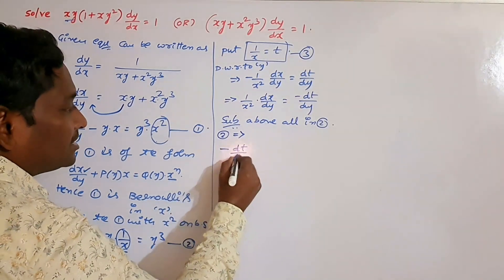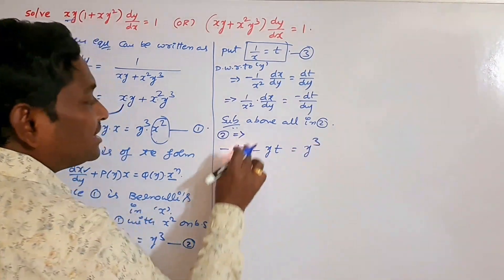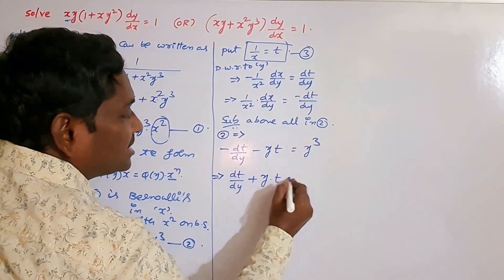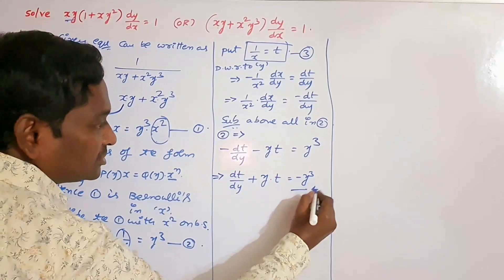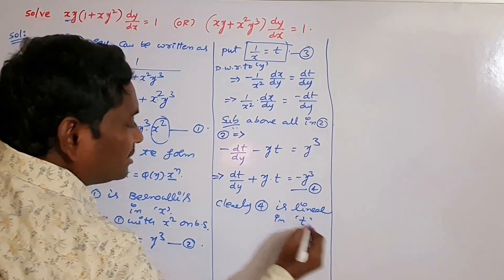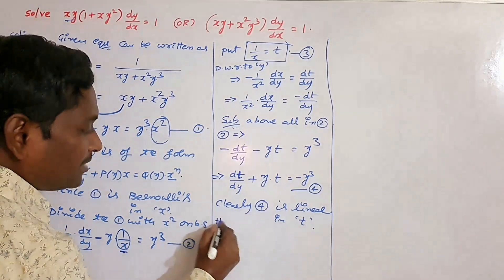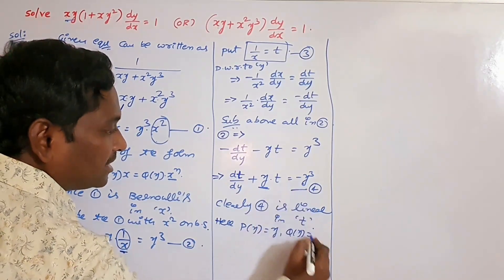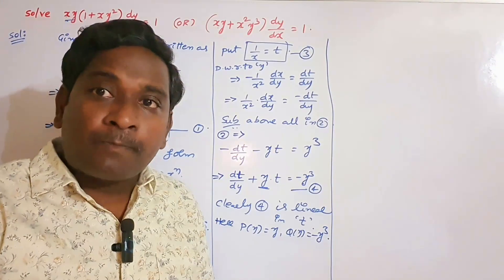After substitution, the first term becomes minus dt by dy, minus y into t is equal to y cubed. Multiplying through by minus 1 gives dt by dy plus y into t is equal to minus y cubed. Clearly, this new equation is linear in the dependent variable t. Here p of y equals y, and q of y equals minus y cubed.